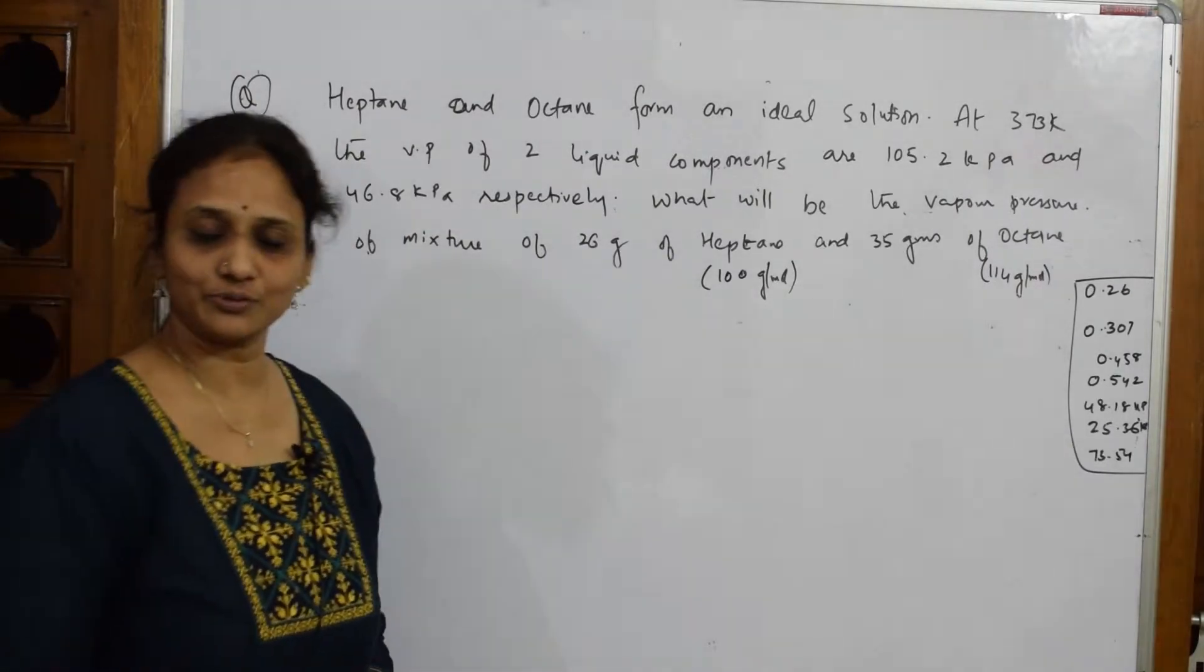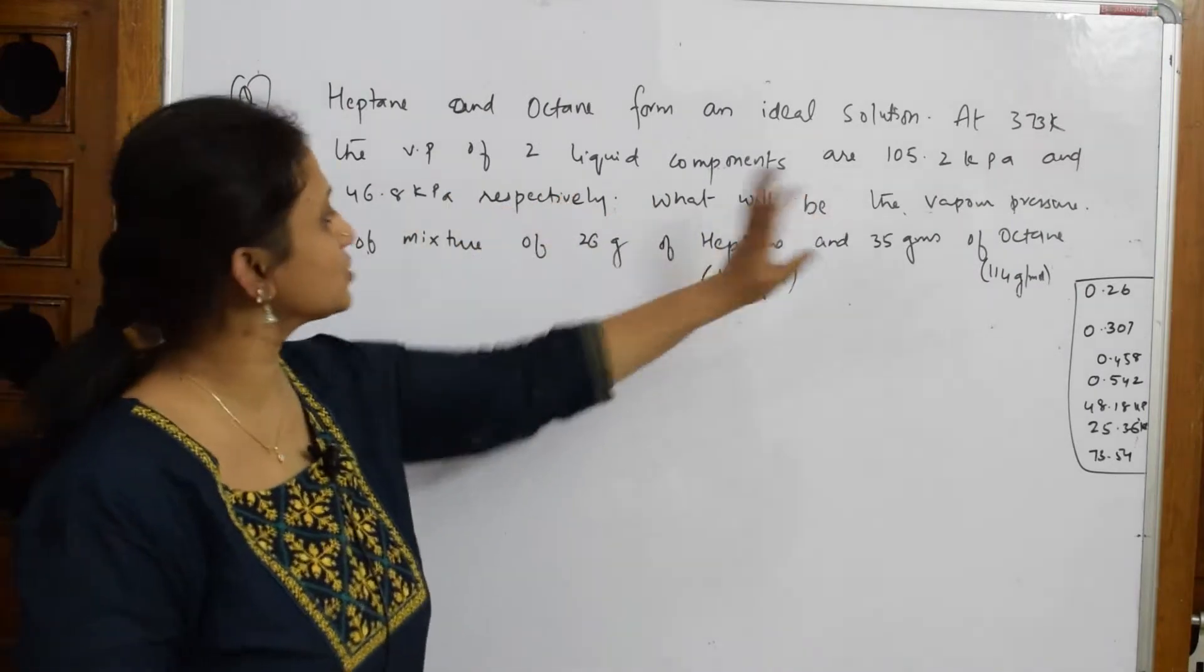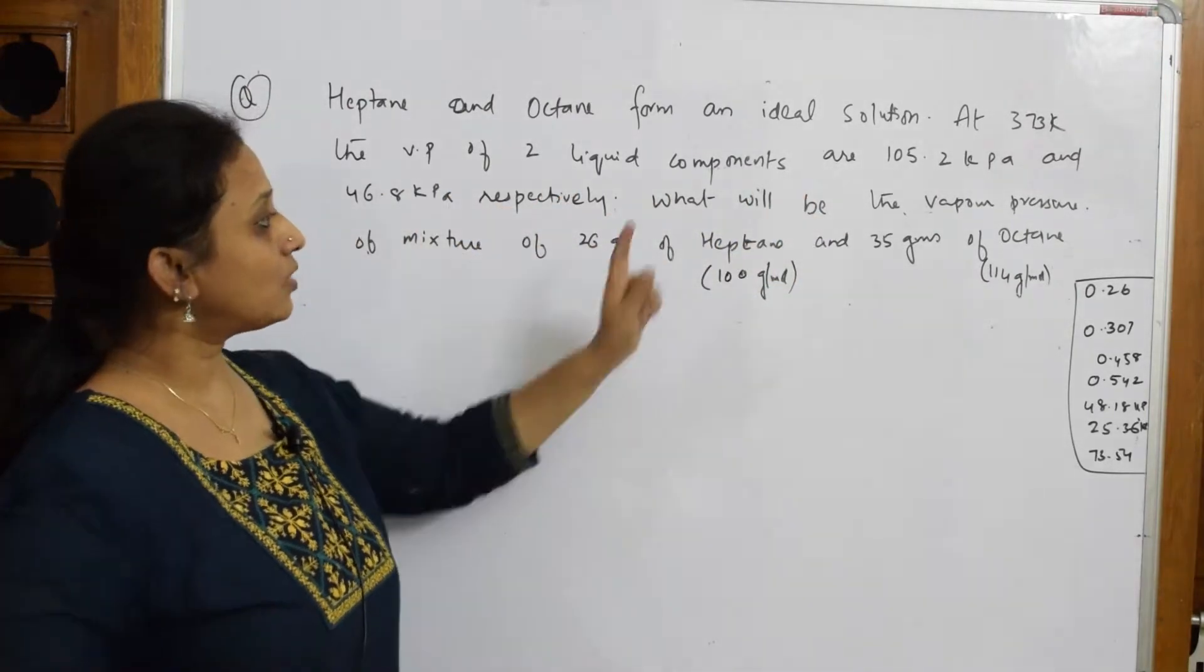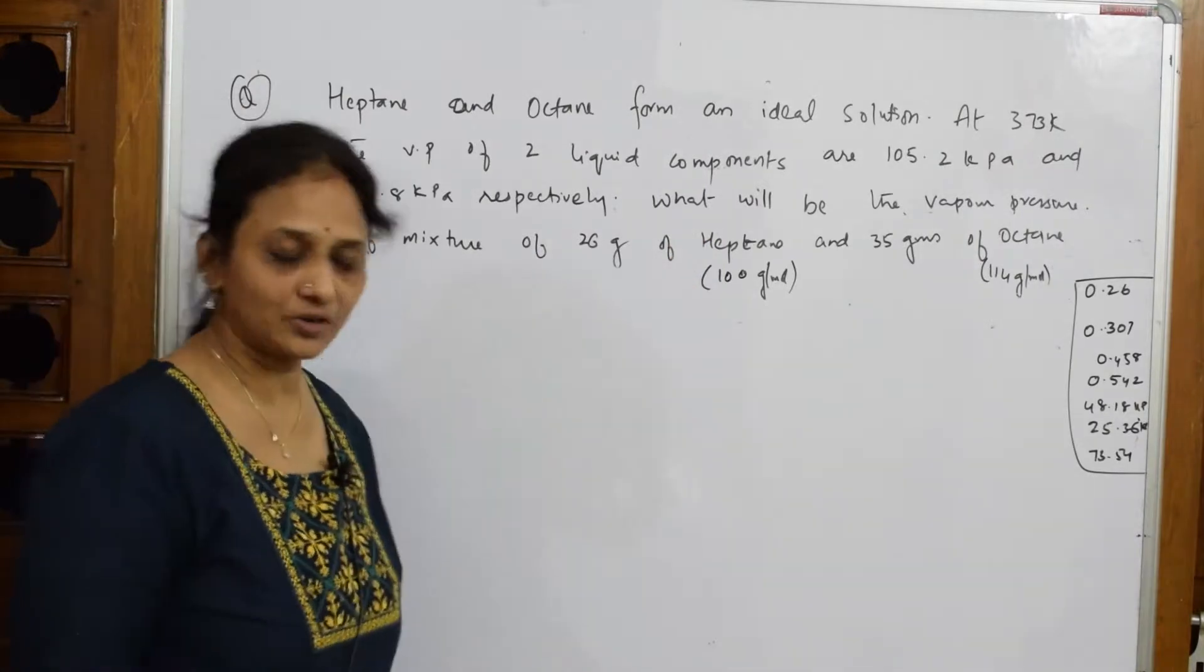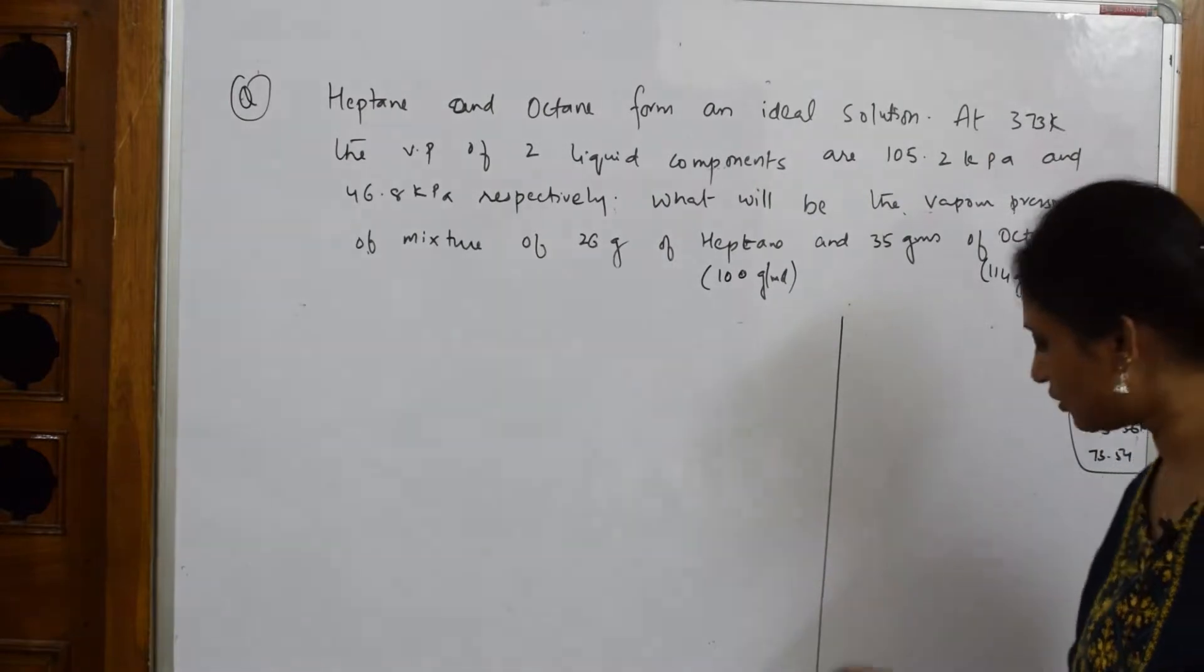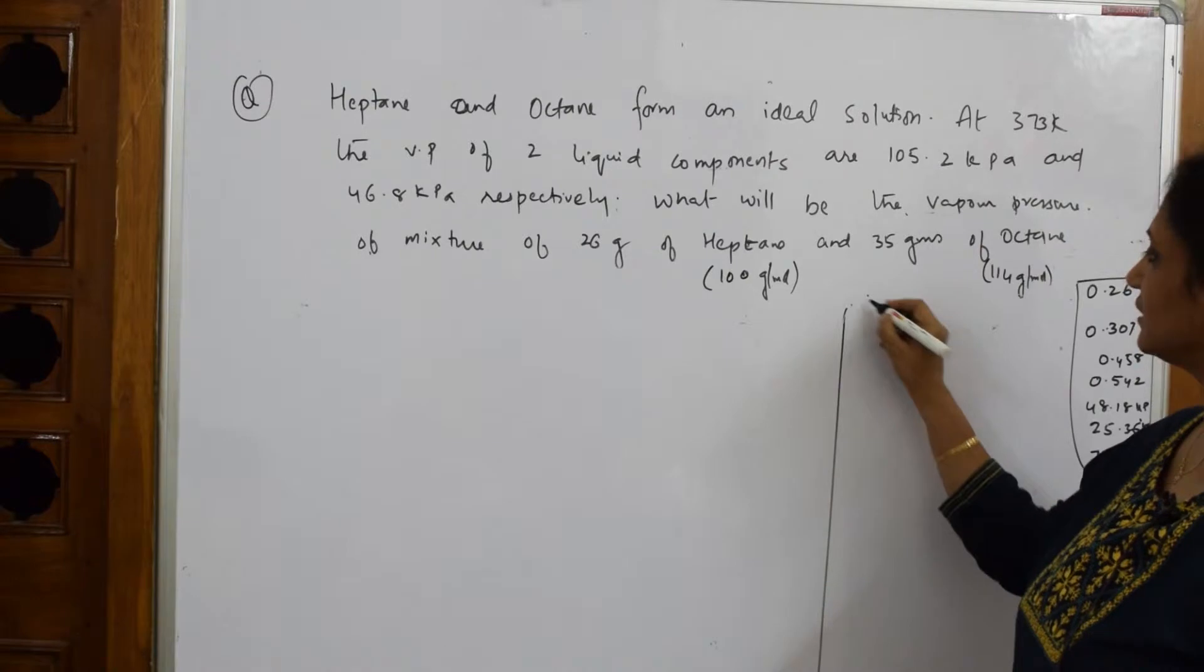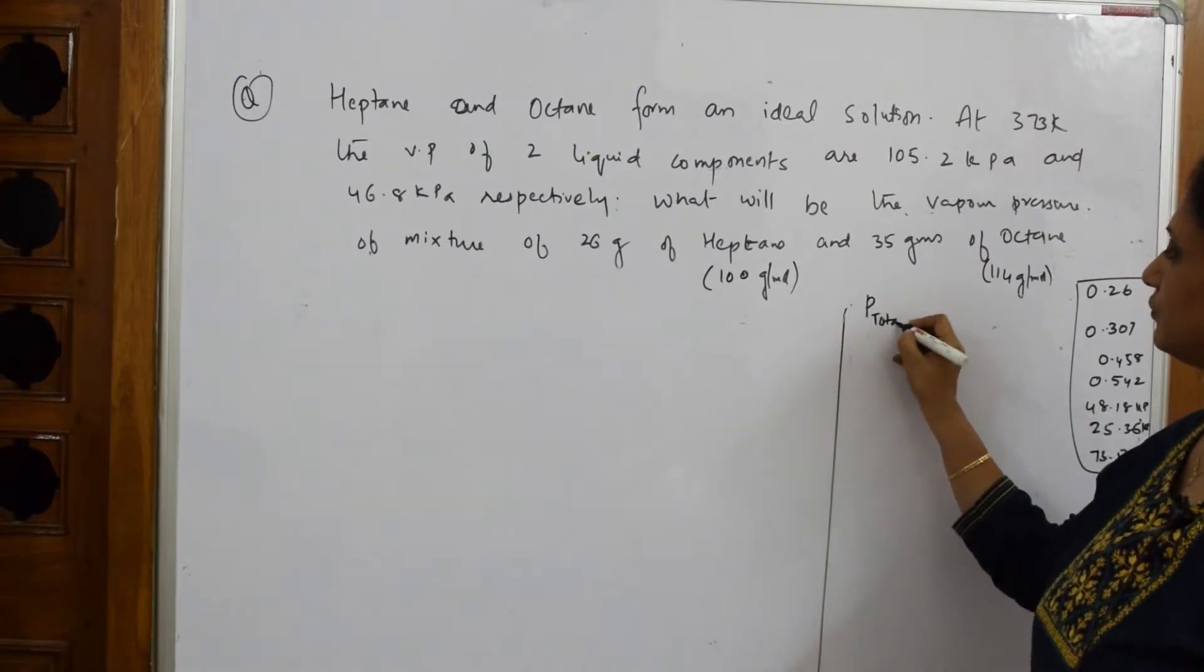They obey Raoul's law so they form an ideal solution. At 373 Kelvin, the vapor pressure of two liquid components is given to us. What will be the vapor pressure of the mixture of heptane and octane? Most important thing I have to find out. First of all, let us see what to find out. You are supposed to find out vapor pressure of mixture, that is your P total.